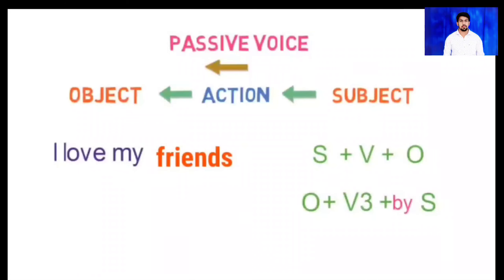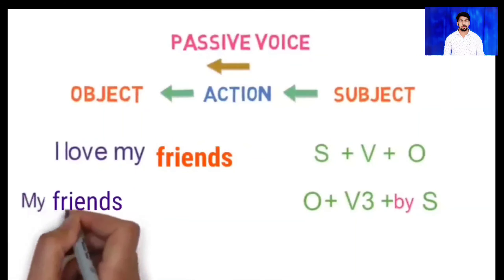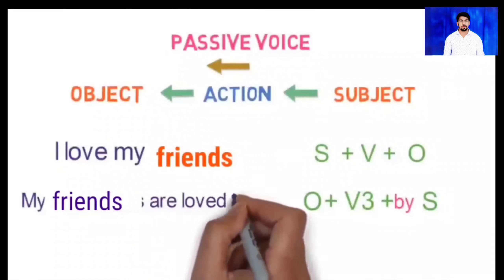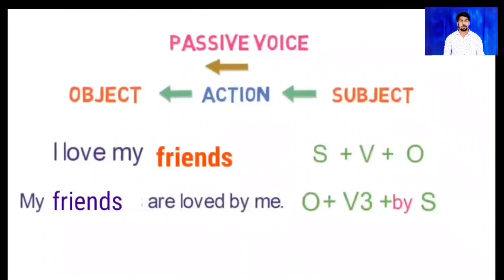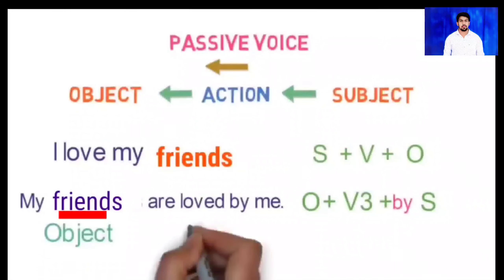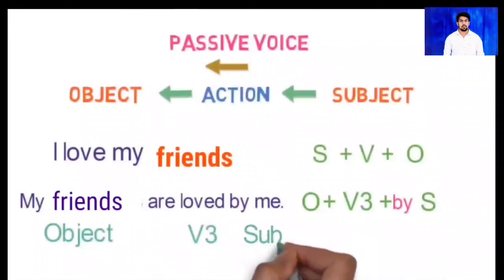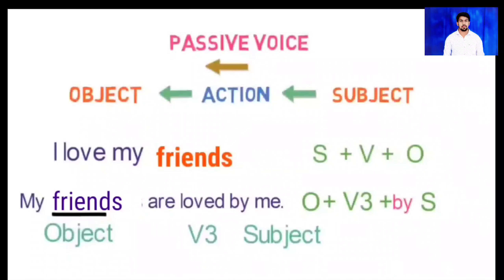The passive voice structure is: Object + third form of the verb + by + Subject. We use the third form of the verb. So when we convert the same sentence it becomes: 'My friends are loved by me.' Here 'friends' is the object, 'loved' is the verb's third form, and 'me' is the subject. My friends are receiving the action of love by me.